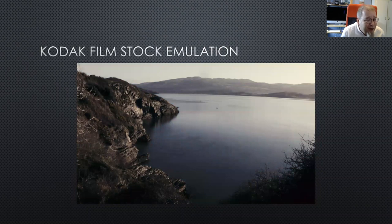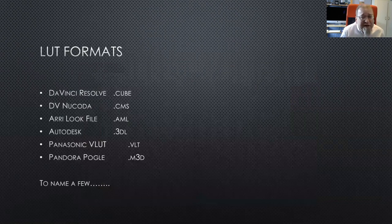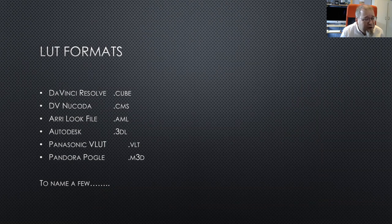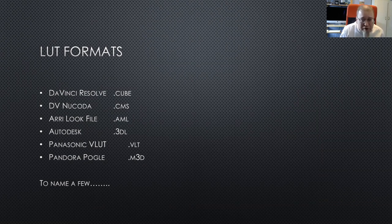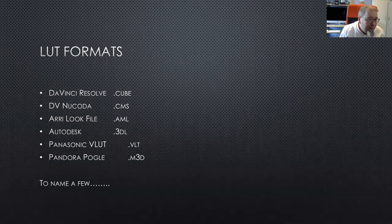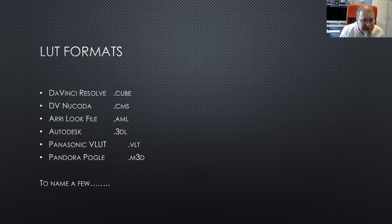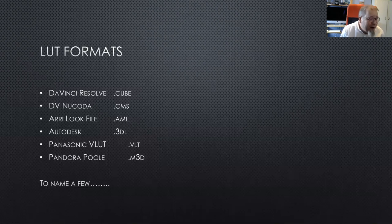This is the Kodak Filmstock Emulation LUT — it gives a fairly gritty look, which might be nice for a hard drama. These LUTs are supplied with your Nucoda Academy so you can play with them. As for LUT formats, there are millions: DaVinci Resolve uses .cube, DV Nucoda uses .cms. You can also upload a show LUT into an Arri Alexa so that its LUT output has your show LUT applied — for that you'd need to convert to an .AML file. There are also Panasonic .VLT and Pandora Poggle .M3D formats, to name a few.